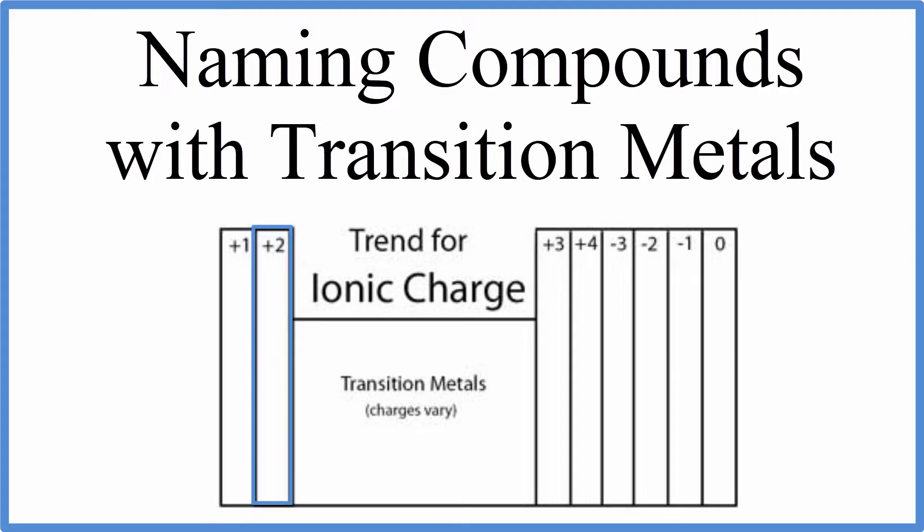When you get to the center, you have the transition metals, and they have variable charges. That means sometimes, for instance, iron is plus 2, and sometimes it's plus 3. And as we name compounds, we need to take that into account.